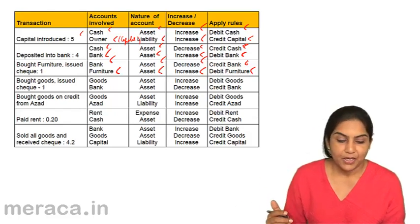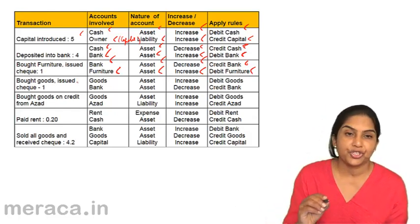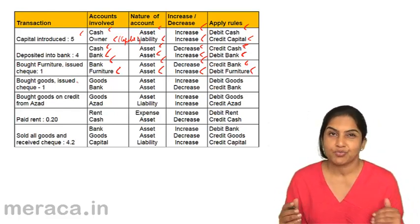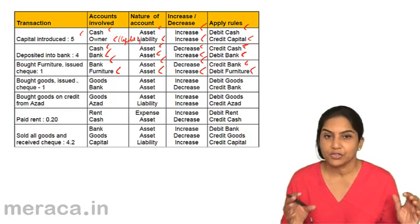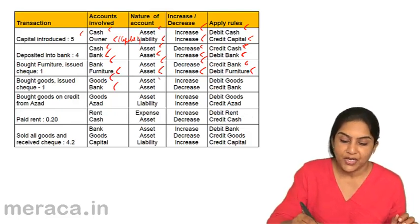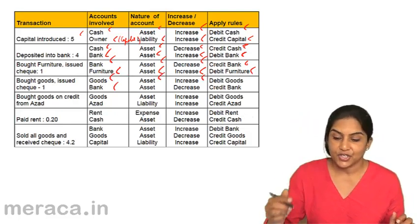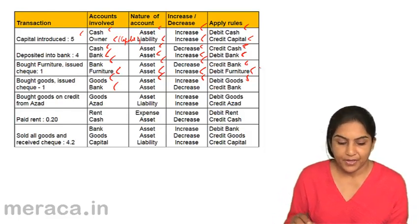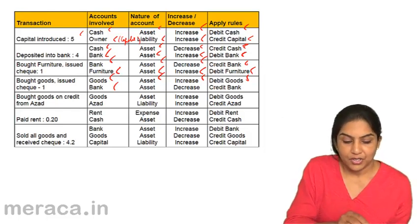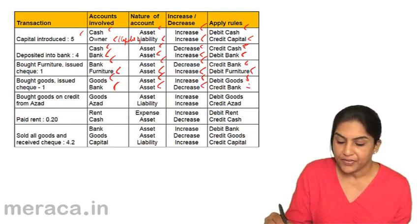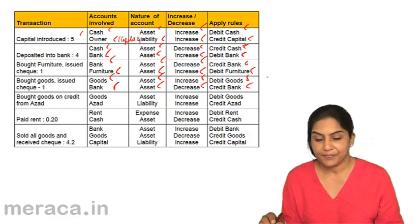One more example: bought goods and issued check. Accounts involved are goods and bank. We bought goods — it is an asset which has increased, therefore we debit goods. Remember, assets are debits. We issued a check, so the bank balance is an asset that has come down, therefore we credit bank.